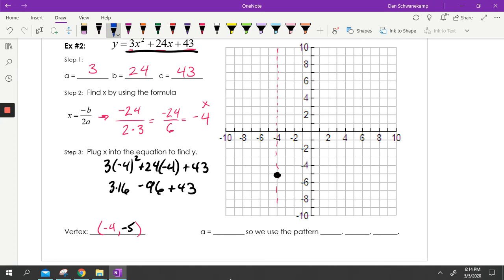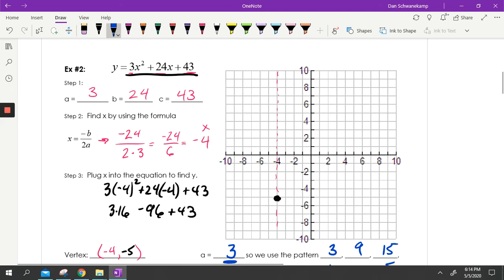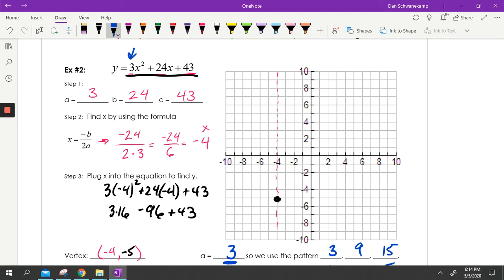My A is 3. So since my A is 3, we're going to use the pattern not 1, 3, 5 anymore. But we're going to multiply all of those numbers by 3 because that's my base. And so my new pattern is 3, 9, 15. So this is a skinnier parabola because when you have that leading coefficient of a number bigger than 1, it's going to get skinnier. So 1, 2, 3 over 1. 1, 2, 3, 4, 5, 6, 7, 8, 9 over 1. And go from there. 15 is too much. I'm not going to do it.